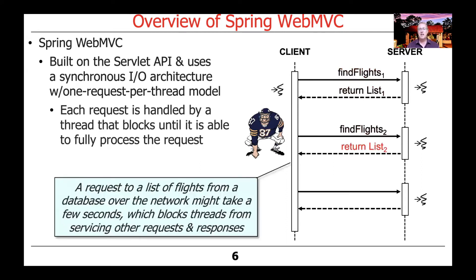Here's a simple example based loosely on our flights microservices implementation of our flight listing app, where we have a client that sends requests to the server to find different flights. The request goes over to the server, there may be a database lookup that might take a while to run if there's a large number of airline databases to query. As a consequence, the thread on the server handling that request will be blocked and won't be able to service other requests. Likewise, on the client side, the client thread will be blocked waiting for that to return.